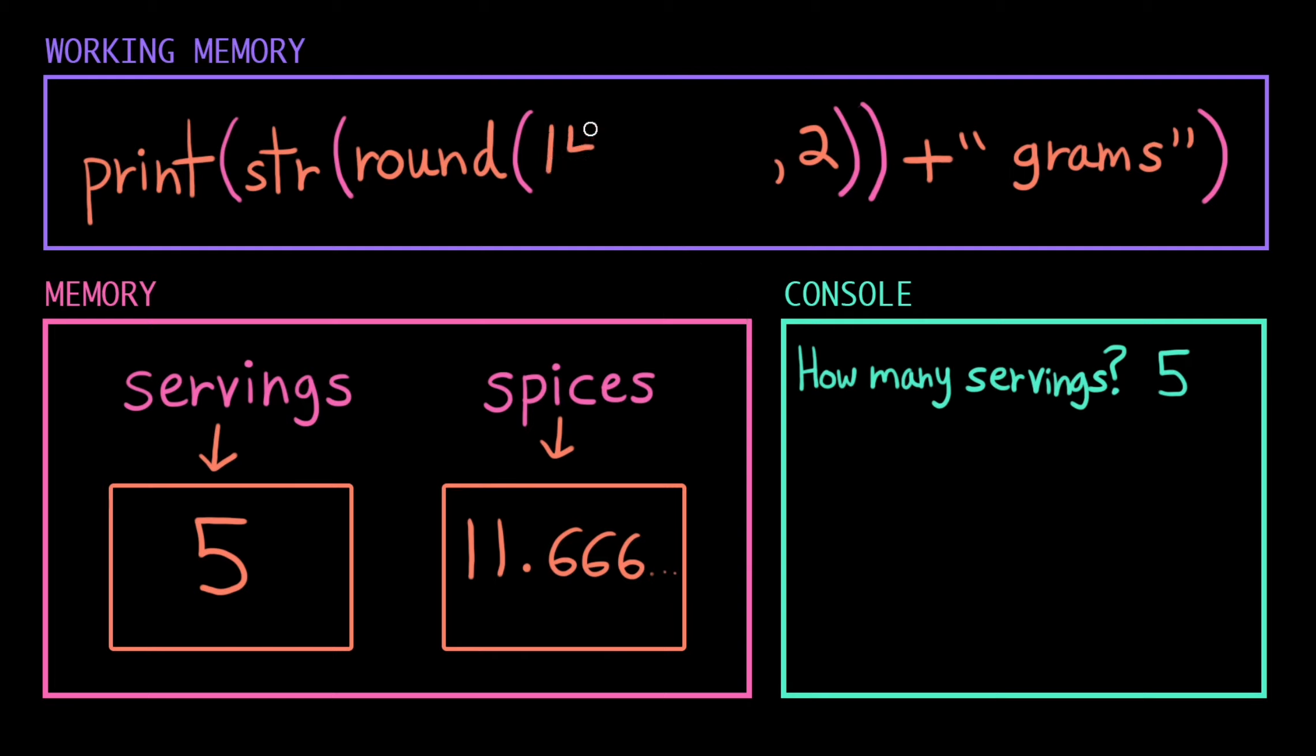Now everything inside here has been simplified, so we peek out and we see the round function. The round function tells the computer to take that first value and round it to the number of decimal places that the second value says. Here we're rounding to two decimal places.